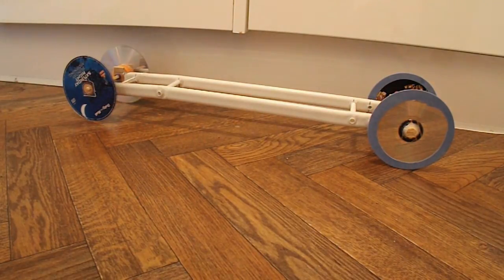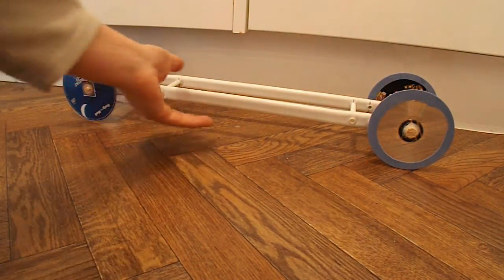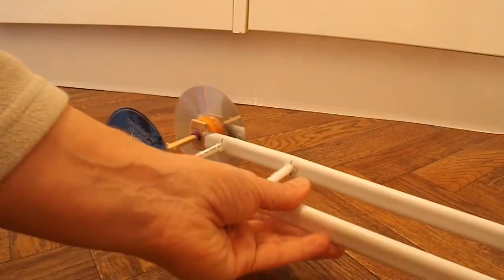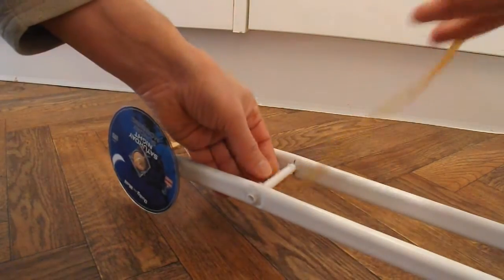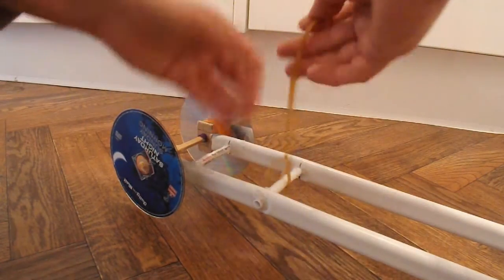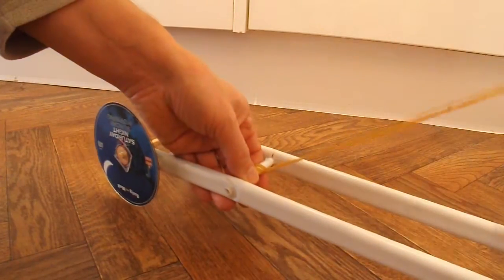So I'll demonstrate it on one of my old cars here. First thing I'll do is attach the rubber band to the chassis. Just loop it round itself. So there we go.